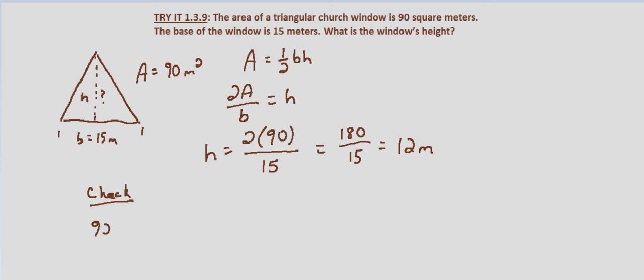So we want to know does 90 equal one half times 15 times 12. Does 90 equal, go ahead and do the 12 times one half since those are even that becomes 6.